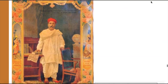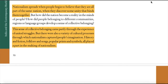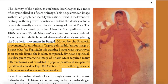The Sense of Collective Belonging. Nationalism spreads when people begin to believe that they are all part of the same nation, when they discover some unity that binds them together. But how did the nation become a reality in the minds of people? How did people belonging to different communities, regions or language groups develop a sense of collective belonging? This sense of collective belonging came partly through the experience of united struggles. But there were also a variety of cultural processes through which nationalism captured people's imagination. The identity of the nation is most often symbolized in a figure or image that helps create something with which people can identify the nation.